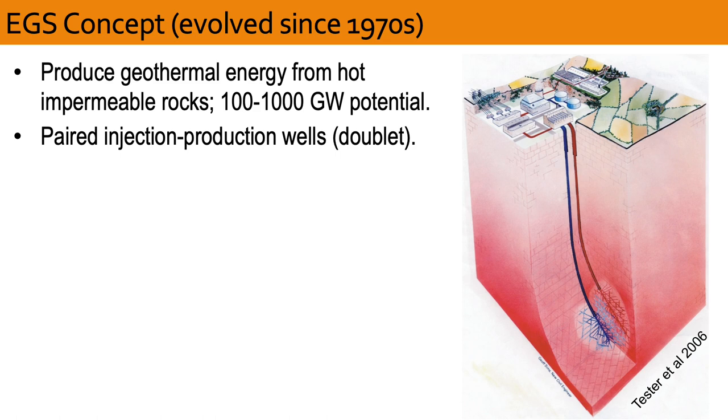Power production requires the drilling of deep wells, usually as a doublet, where one well is used for injecting cold water and the second well is used for producing hot water.